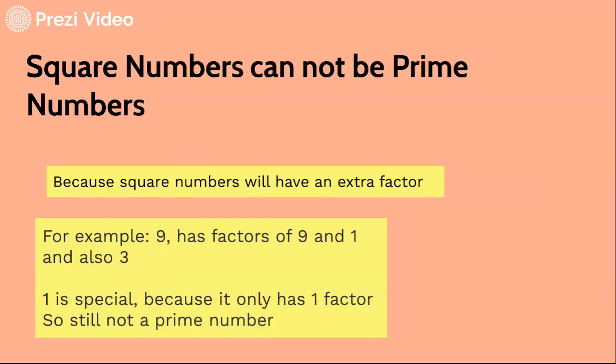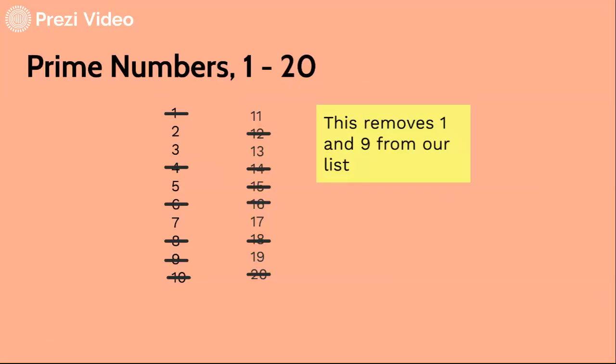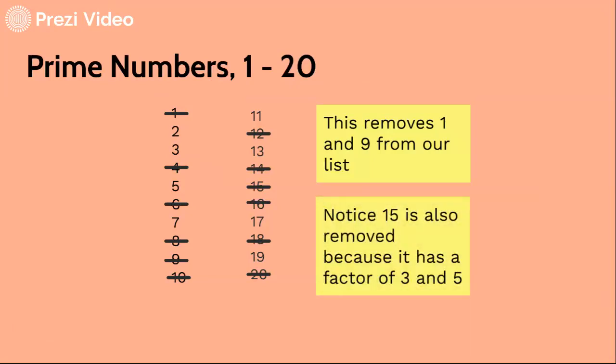And 1 is a special square number because it only has one factor, so it's still not a prime number because it needs two factors. So now this removes some of the list, 1 and 9, and also you can see that 15 is also removed because it has a factor of 3 and 5.